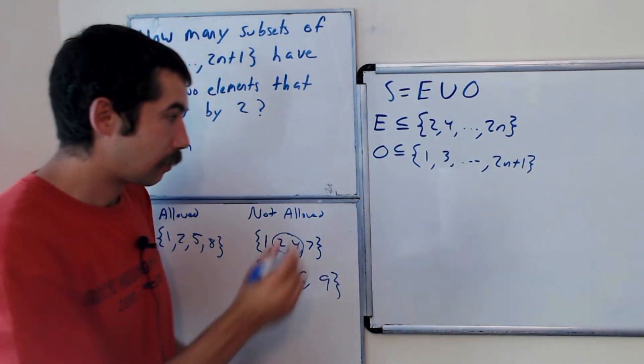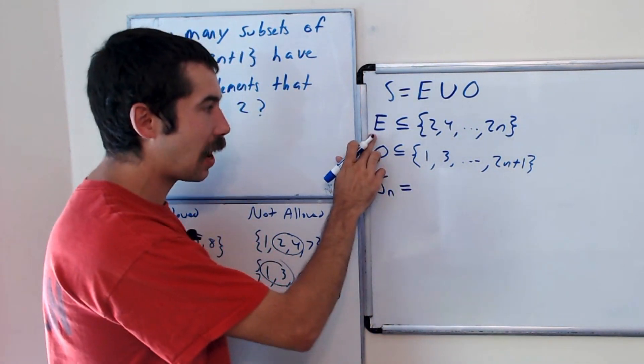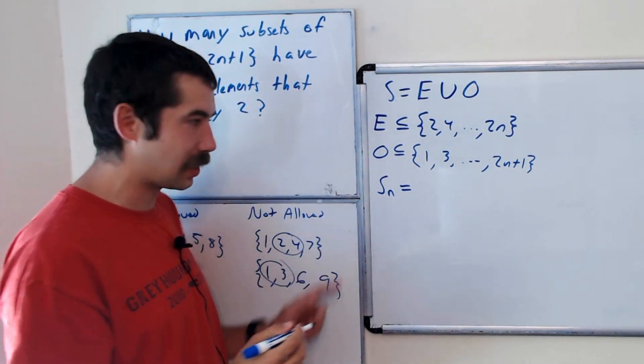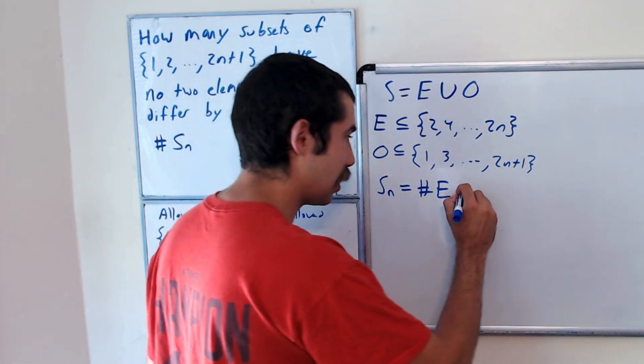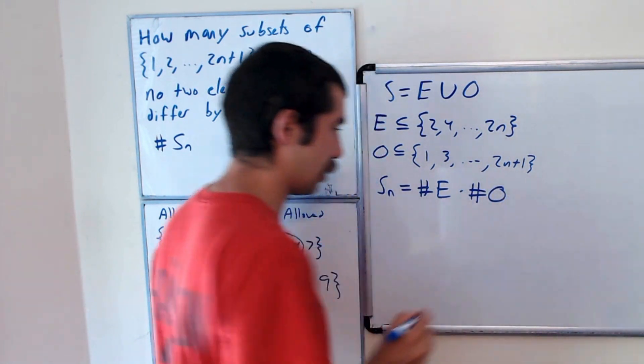Okay, and our answer, Sn, is going to be the product of the number of even subsets times the number of odd subsets. So it's number of even possible even subsets times the number of odd subsets.